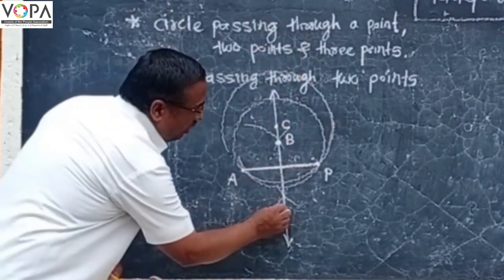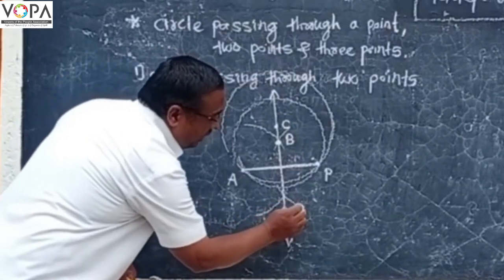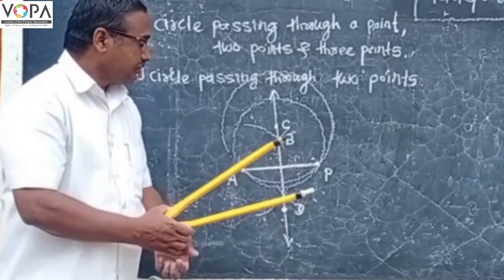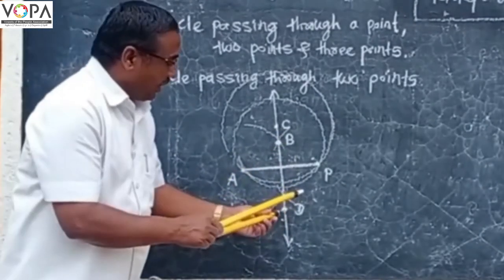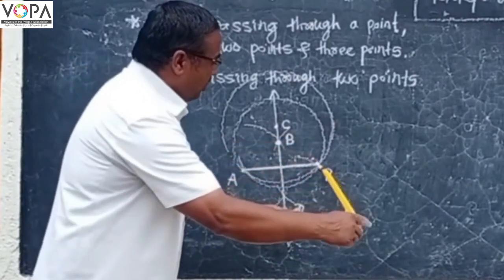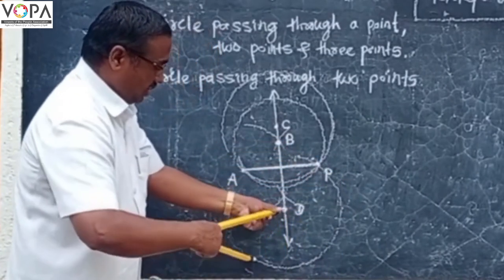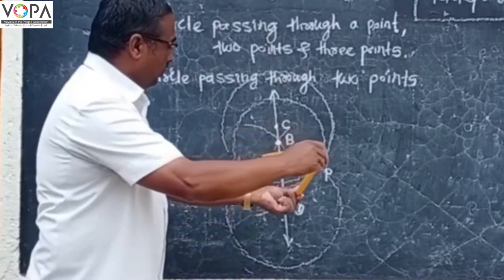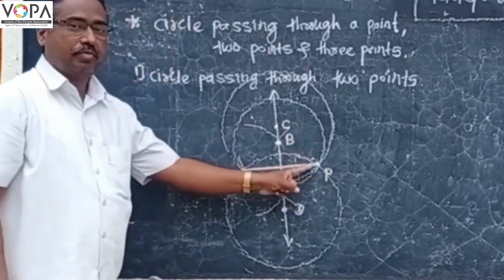Take point D as the center on the perpendicular bisector. Take radius D-P in your compass and draw a circle passing through points A and P.